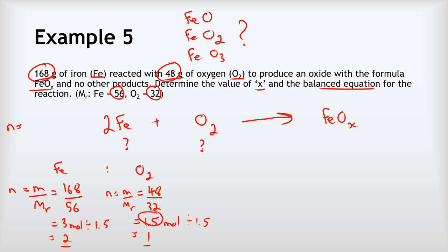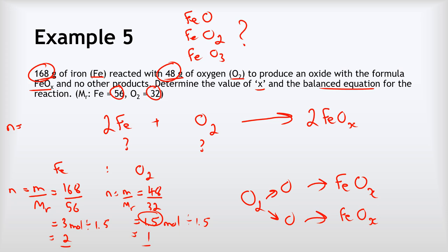Since there are two Fe's, we produce two FeOₓ units. One O₂ contains two oxygens, and those two oxygens are split equally between the two FeOₓ units — so each gets one oxygen. Therefore x = 1, the formula is FeO, and the balanced equation is 2Fe + O₂ → 2FeO.